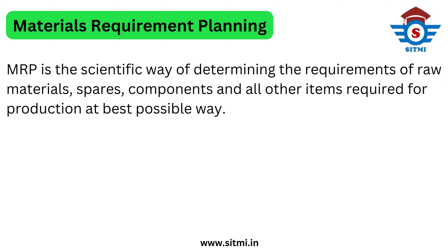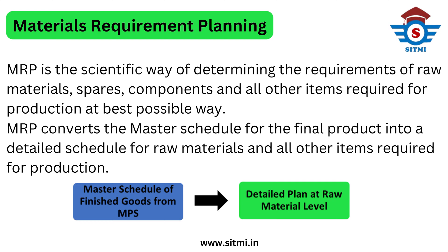Now what is MRP? MRP is simply a scientific way of determining the requirement of all the raw materials, spares, components, and all other items that are required for production in the best possible way. MRP converts the master schedule of a final product into a detailed schedule for raw materials and all other items required for production. So simply, MRP takes input from MPS and gives certain output for further execution.